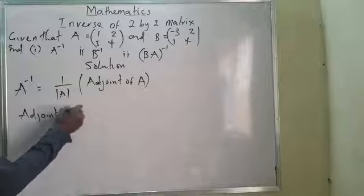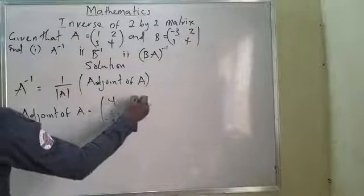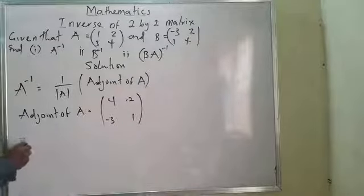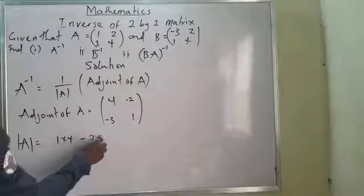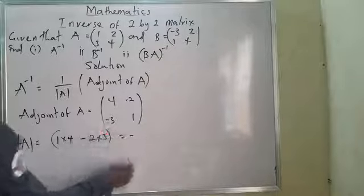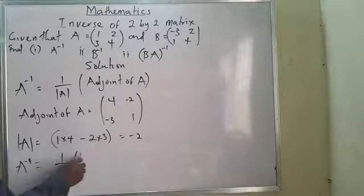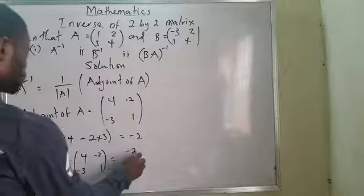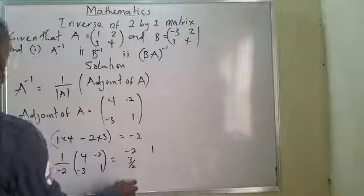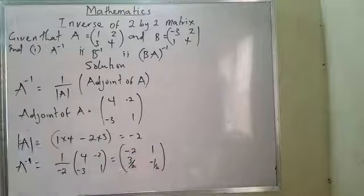The adjoint of A is [4, -2; -3, 1]. The determinant of A equals 1×4 − 2×3 = 4 − 6 = −2. Therefore A⁻¹ equals 1/(−2) × [4, -2; -3, 1], which gives [-2, 1; 3/2, -1/2]. That is A⁻¹.